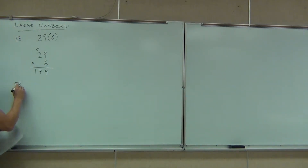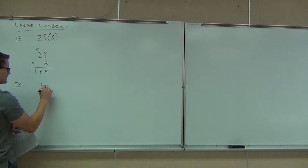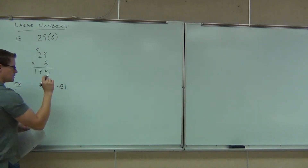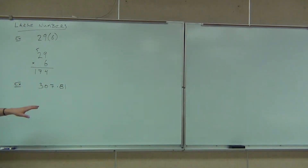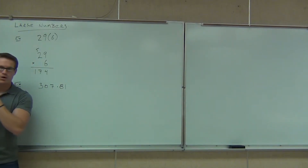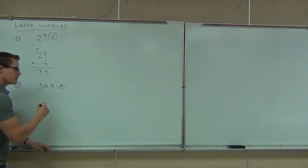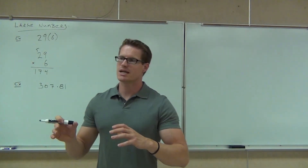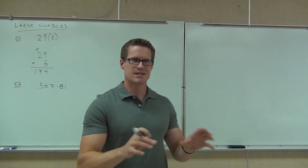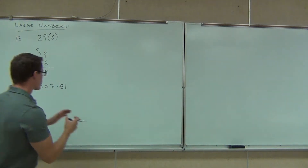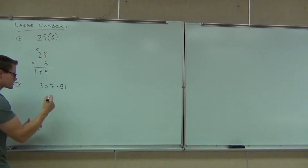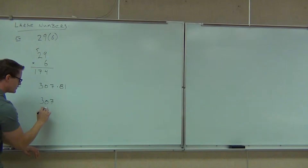Let's do a couple more examples. How about 307 — remember that dot also means multiplication — 307 times 81. We'll line them up vertically. It's going to line up coincidentally by place value, but in multiplication we take care of place values differently. We're lining up along the right-hand side — right-justified, like on a Word document.